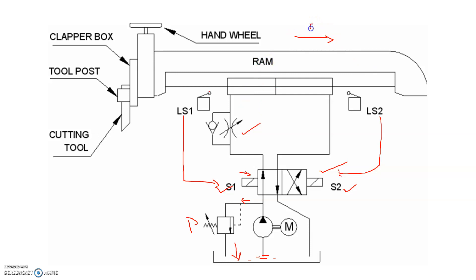Pressurized fluid enters into the direction control valve by means of a flow control valve. The return stroke has a free, faster movement. So the return stroke of the machine has a faster stroke compared to the forward stroke. The forward stroke will be slower and the return stroke will be faster, because the forward stroke has the flow control valve restricting fluid flow to the tank. This produces a controlled slower motion on the forward side, which is helpful for smoother cutting of the workpiece.